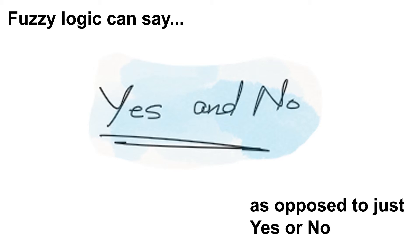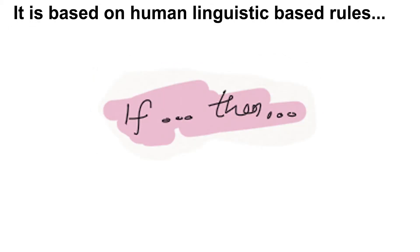Fuzzy logic is based on human linguistic based rules. It uses multiple if and then statements to define its rule base. It uses this rule base to draw inferences from the fuzzy sets.